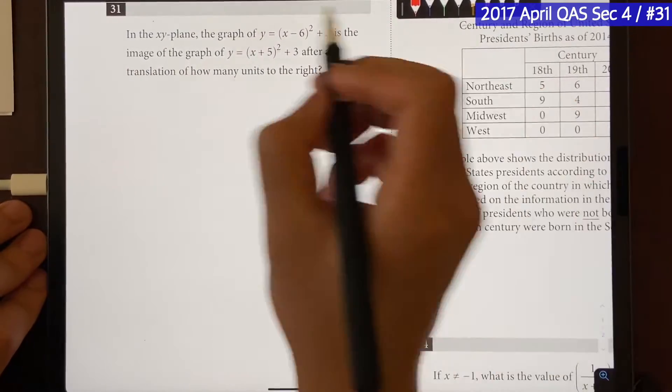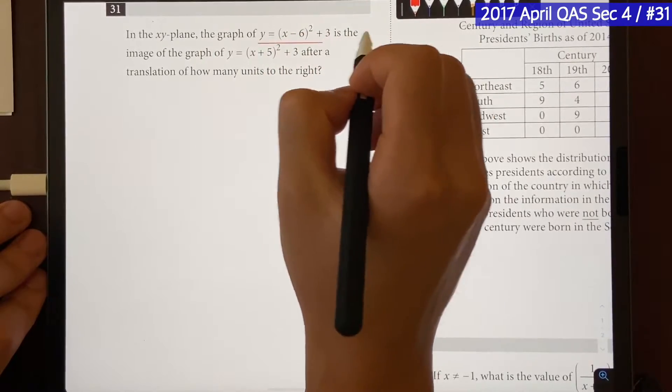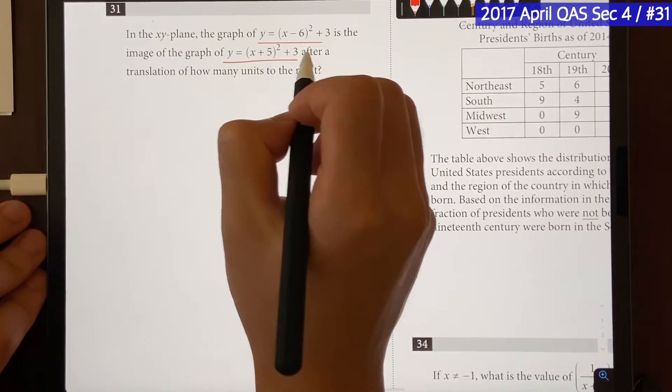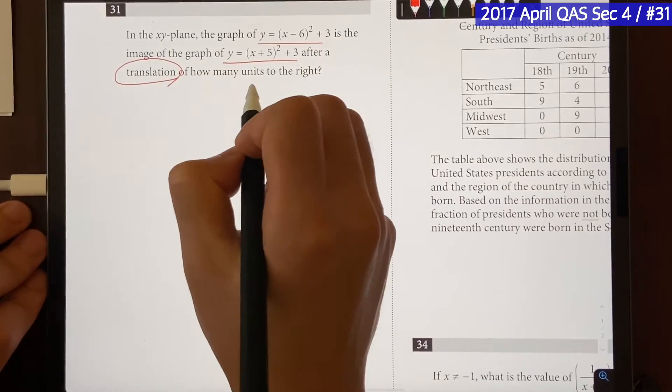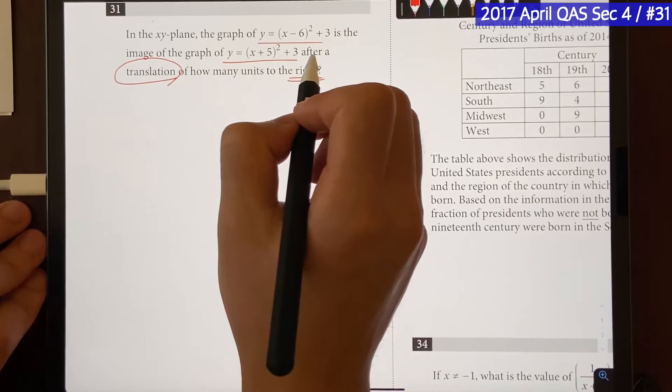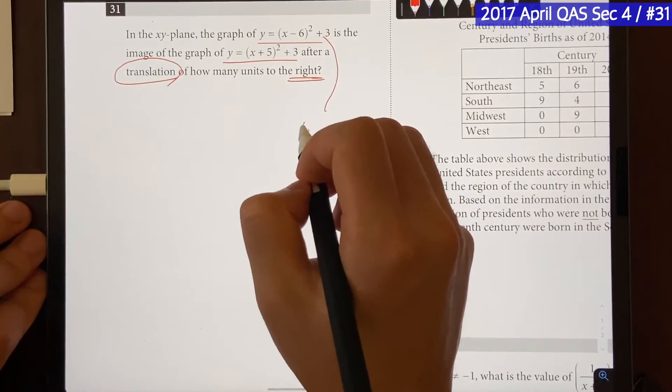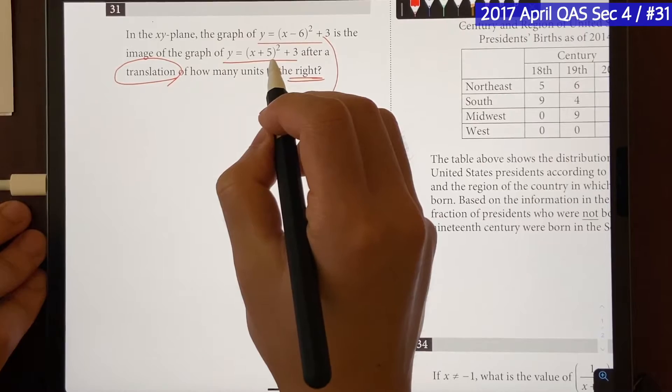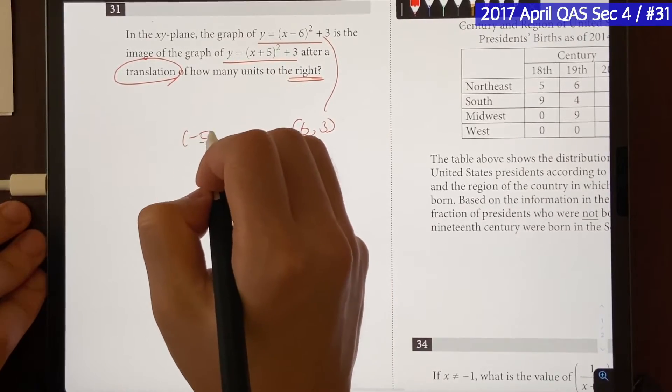So the question says, in the xy plane, the graph of this is the image of graph of this after a translation of how many units to the right. Okay, so they're both in the vertex form, which means this one's going to have a vertex at 6 comma 3, and this one will be about minus 5 comma 3.